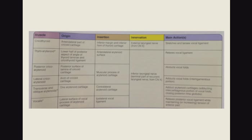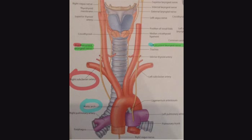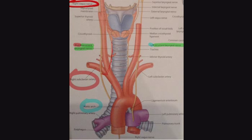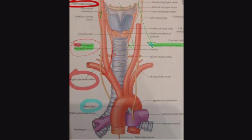You can see in this picture the vagus nerve descending, and as it descends it gives a branch that curves under the subclavian artery on the right side, which becomes the recurrent laryngeal nerve. Why do we call it the recurrent laryngeal nerve? It's a logical name — all nerves go from up to down, except this one, because it goes from down back up. That's why it's called recurrent.